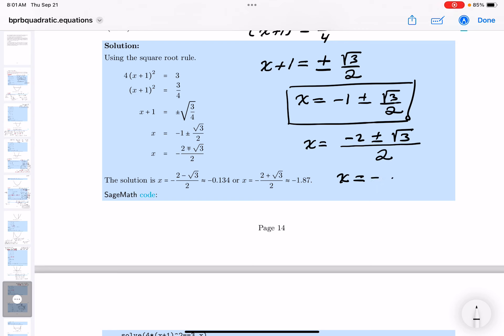I'm going to factor out a minus sign. Minus. You get (2 - √3)/2 or (2 + √3)/2.